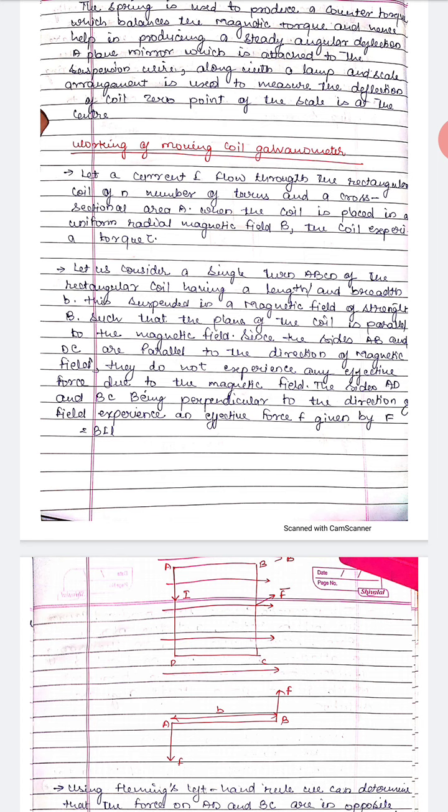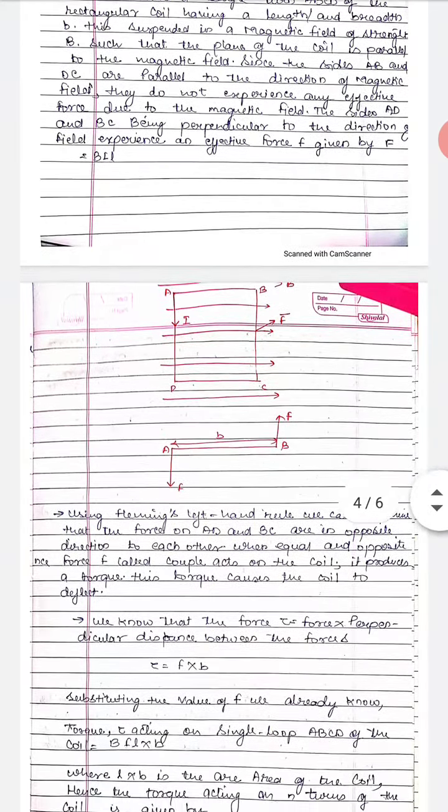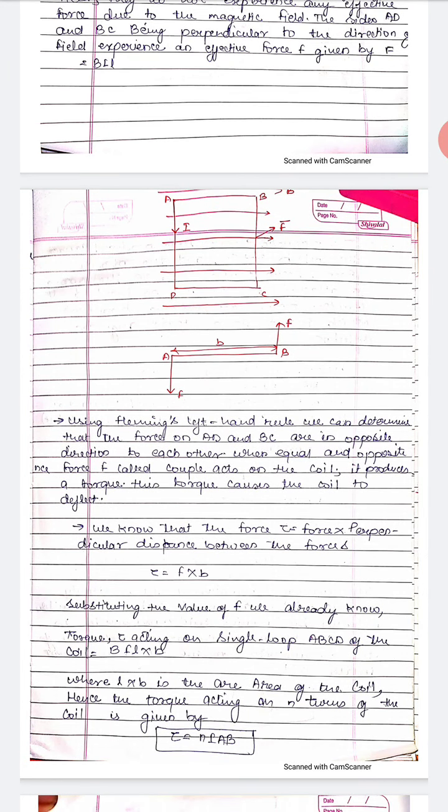The sides AD and BC are perpendicular to the direction of the field, so they experience a force. The force is F = Bil and sin 90° = 1. Using Fleming's left hand rule, we can determine the force on AD and BC, which are equal and opposite to each other. These form a couple acting on the coil, which produces a torque.